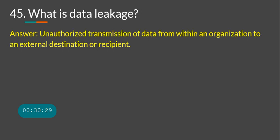What is data leakage? Advanced persistent threat groups target data owned by organizations — customer data, SSNs, confidential information — and sell it. Data leakage means someone has gained access to your data and it is being exfiltrated to an external party without your knowledge.